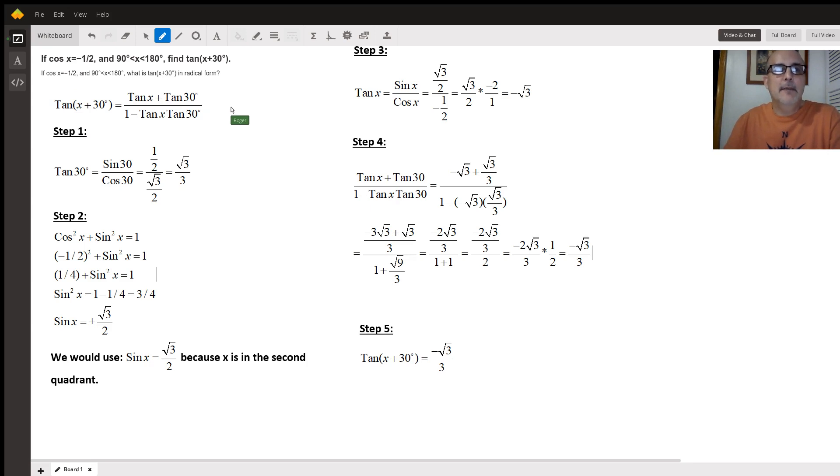Now I need to find the tangent of 30. 30 is in the first quadrant so that's sine of 30 over cosine of 30 which is one half over the square root of three over two which ends up being the square root of three over three. So that's my first piece of the puzzle.